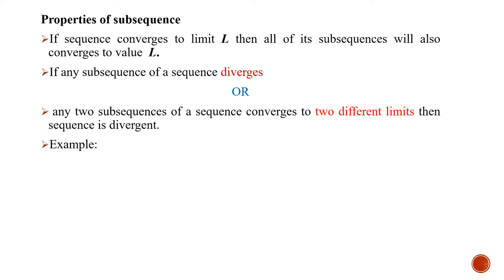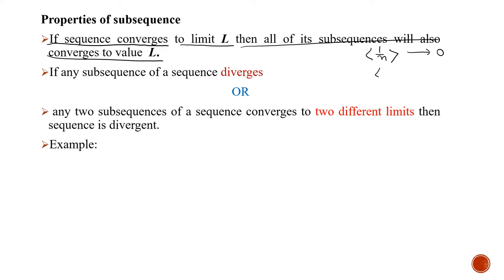Now I'll discuss two properties of subsequences. The first property is: if a sequence converges to a limit L, then all of its subsequences will also converge to the value L. For example, if I take the sequence 1/n, it converges to 0, and any two subsequences of it will also converge to 0.